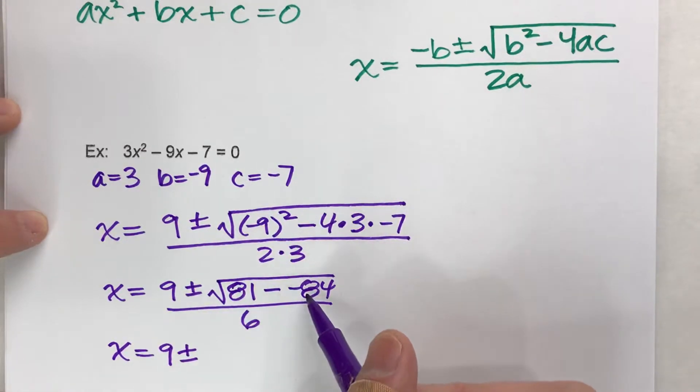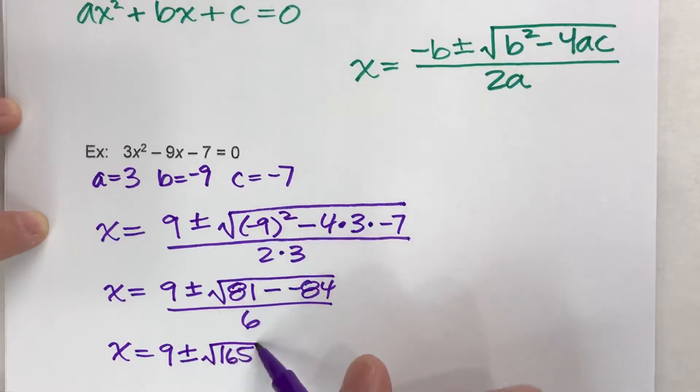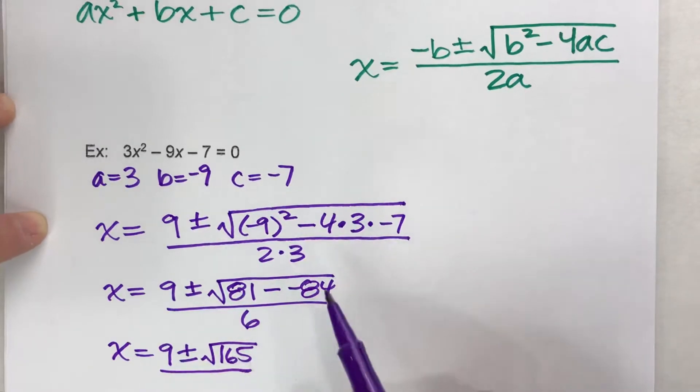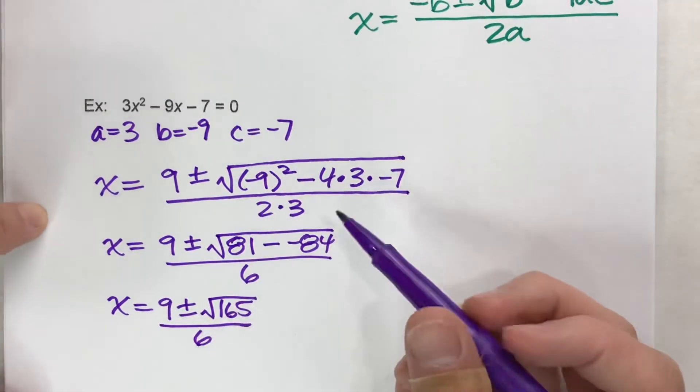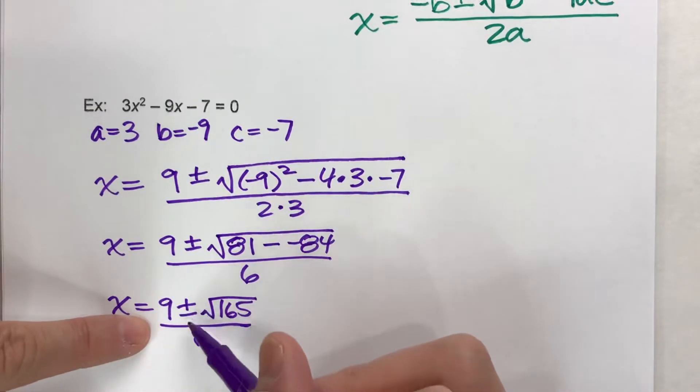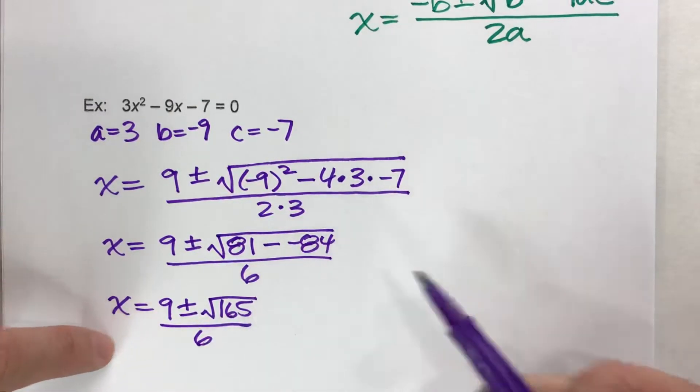Now, let's finish off the square root there. 81 minus negative 84, subtracting a negative is like adding a positive. So this becomes 165. So this whole thing has simplified down quite a bit. This is now x is 9 plus or minus the square root of 165 divided by 6.